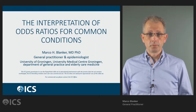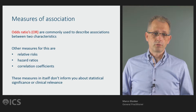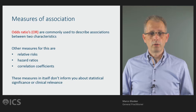Odds ratios are commonly used to describe associations between two or more characteristics. Other measures used for that are relative risk, hazard ratio, and correlation coefficients, for example.